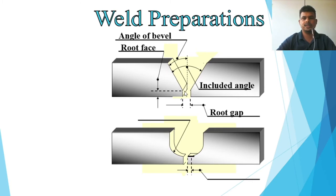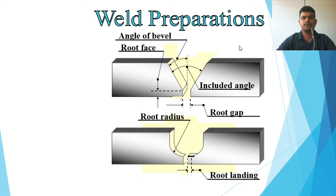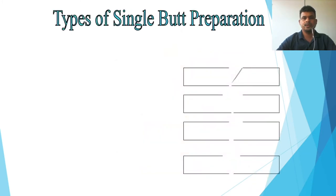You can also see the root face, and for J-type or U-type preparation, the root radius and root landing. These preparation parameters must be followed as per the WPS (Welding Procedure Specification), which clearly specifies the bevel angle, root gap, root face, and root radius. When going to site, obtain the project-approved WPS and follow it during preparation.